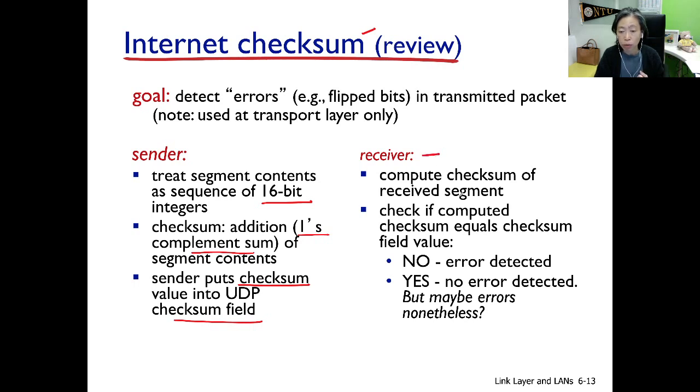At the receiving end, what we do is we take the data out and compute the checksum again. And then we compare the computed checksum to the checksum in the header fields. If they don't equal each other, obviously there is an error. If they do equal each other, well, the checksum says no error detected.